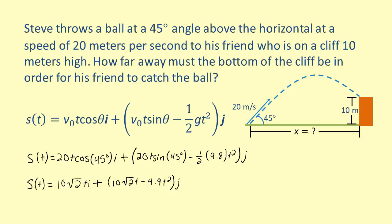Remember that the coefficient of i is the horizontal component, and the coefficient of j is the vertical component. We know that when the ball reaches Steve's friend, it will be 10 meters above the ground, so let's set the vertical component equal to 10.